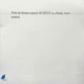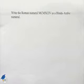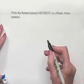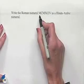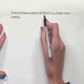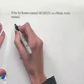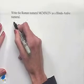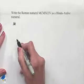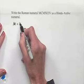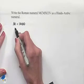Now we're going to work a problem dealing with the Roman numeration system. Write the Roman numeral MCMXCIV as a Hindu-Arabic numeral. We'll start by writing down what each of these letters means in our Hindu-Arabic system. We have our M which means 1000, and we have a C which equals 100.